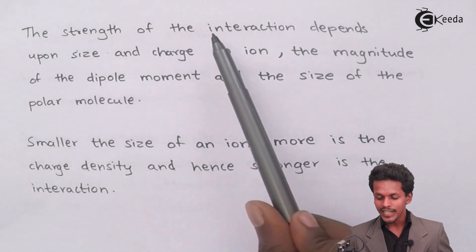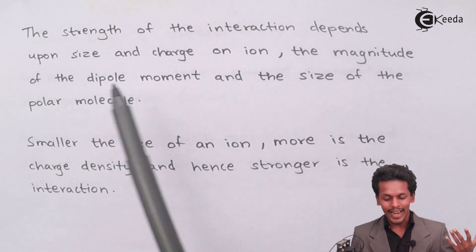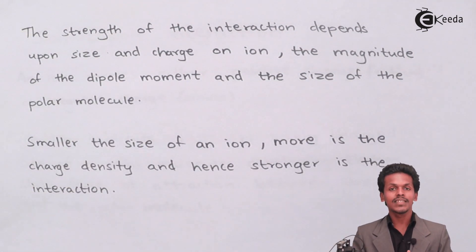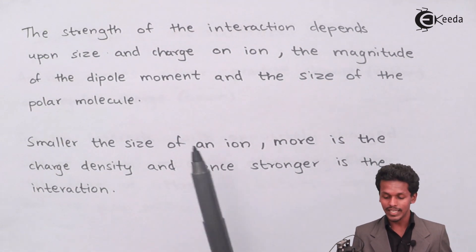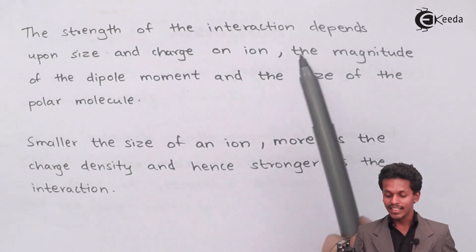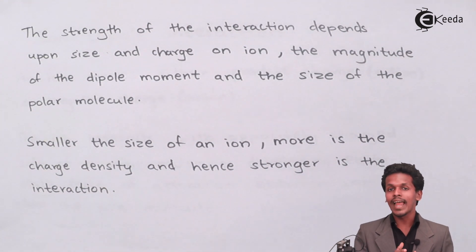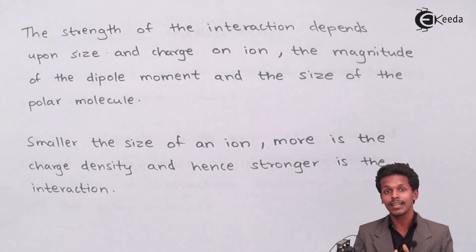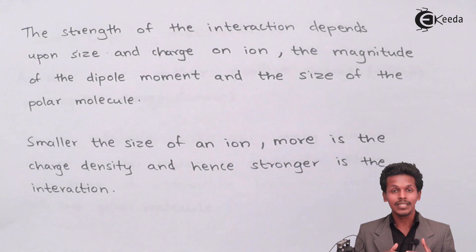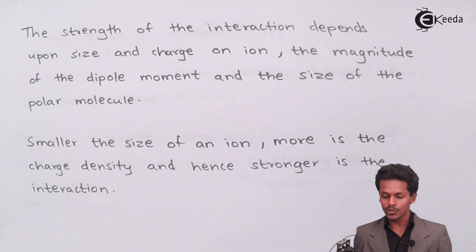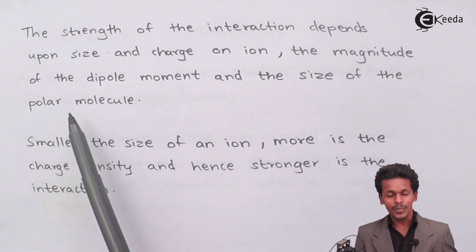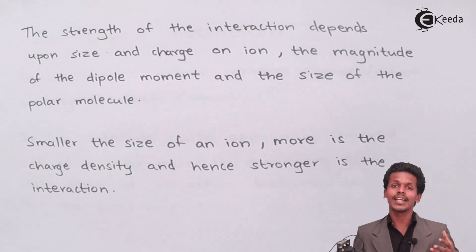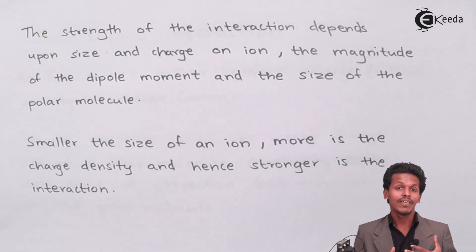The strength of the ion-dipole interaction depends on: the size and charge of the ion (whether cation or anion), the magnitude of the dipole moment of the polar molecule, and the size of the polar molecule. A polar molecule with a higher dipole moment will have a stronger interaction, and the size of the polar molecule also affects how strongly cations or anions interact with it.